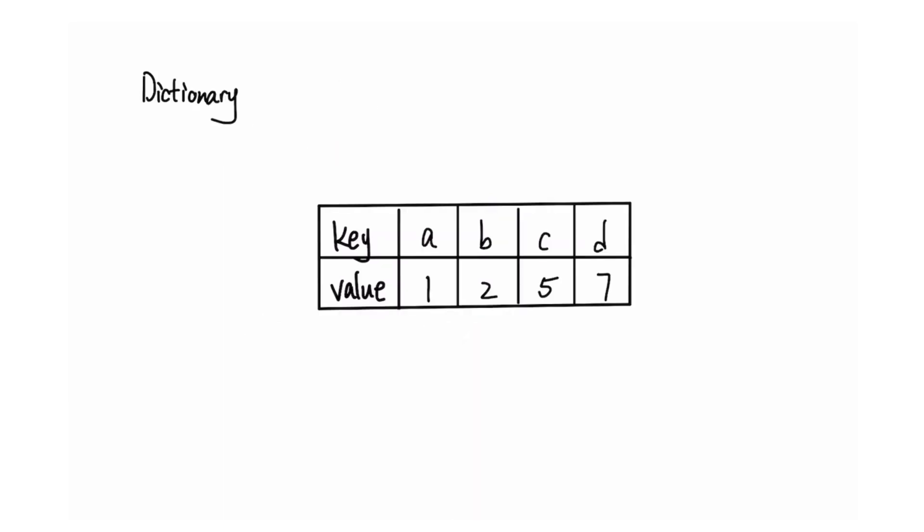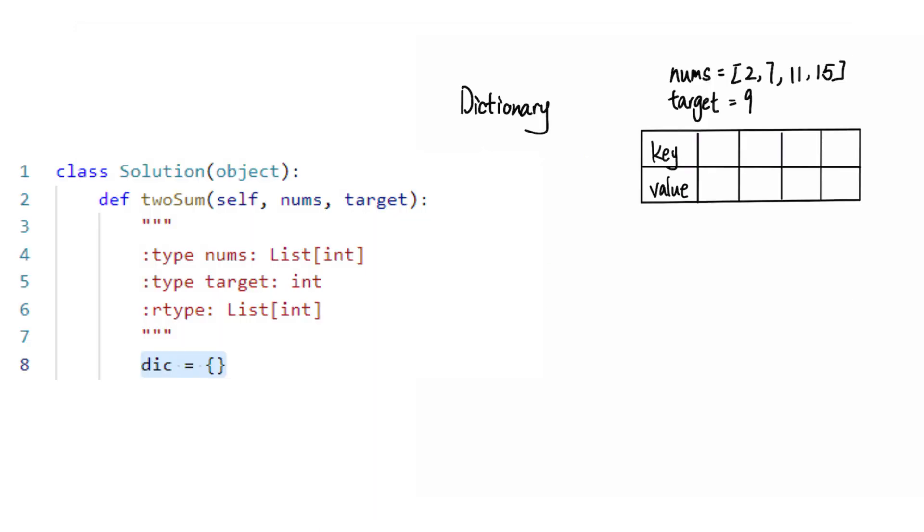We can find a more efficient approach using a dictionary, since checking the existence of a given key in the dictionary only takes constant time. We first create an empty dictionary and use the key to store the elements of integer array and the value as element's position. The dictionary is used to store the values we have seen so far.